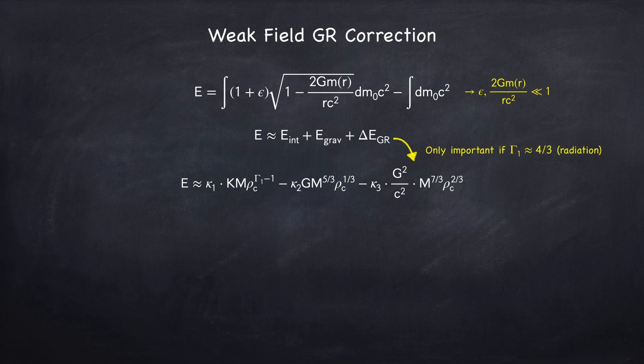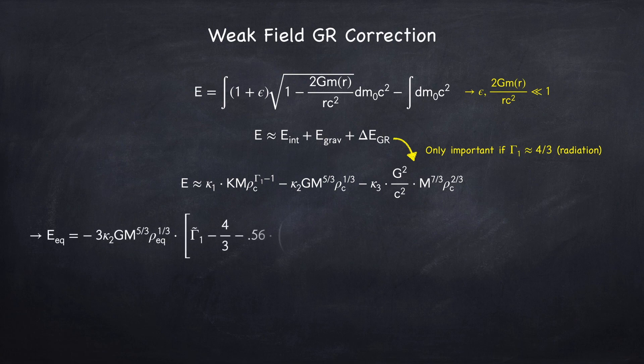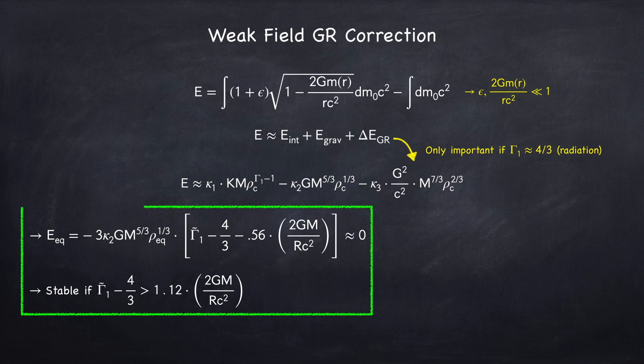This correction is only important when the Newtonian energy is close to 0, so when gamma 1 is close to 4 thirds. This led us to a modified equilibrium energy, when including the GR correction, and a new criteria for stability.